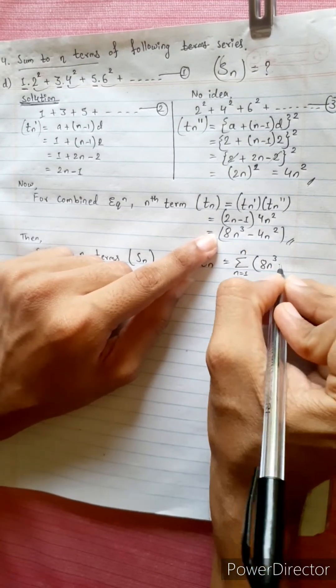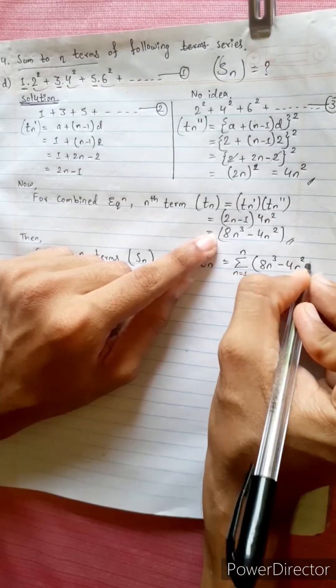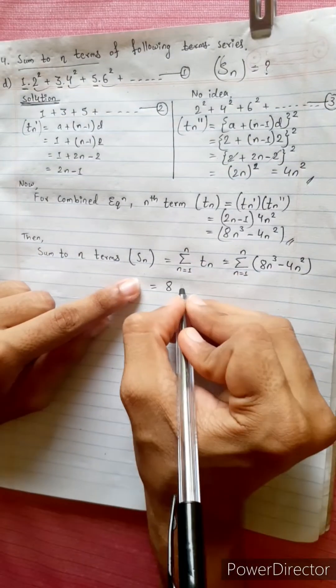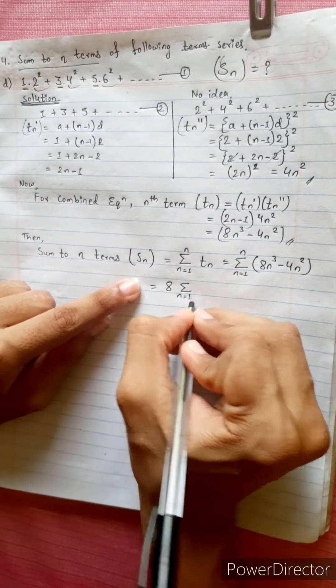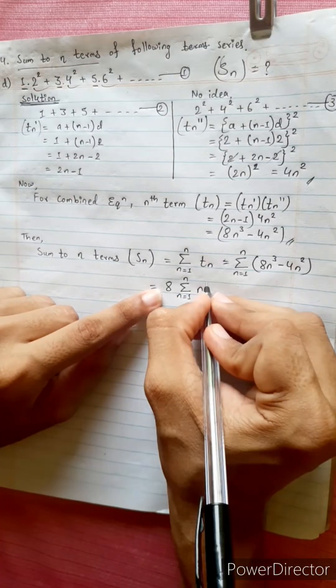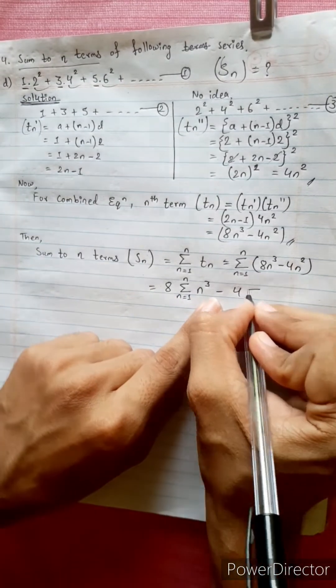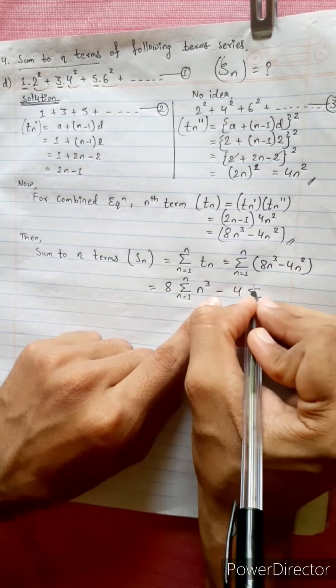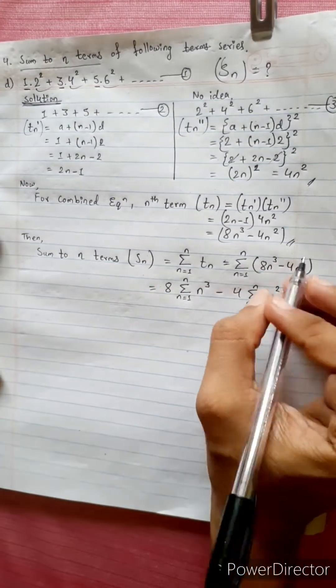8n cube minus 4n square. Equals to 8 times summation n equals 1 up to n of n cube, minus 4 times summation n equals 1 to n of n square.